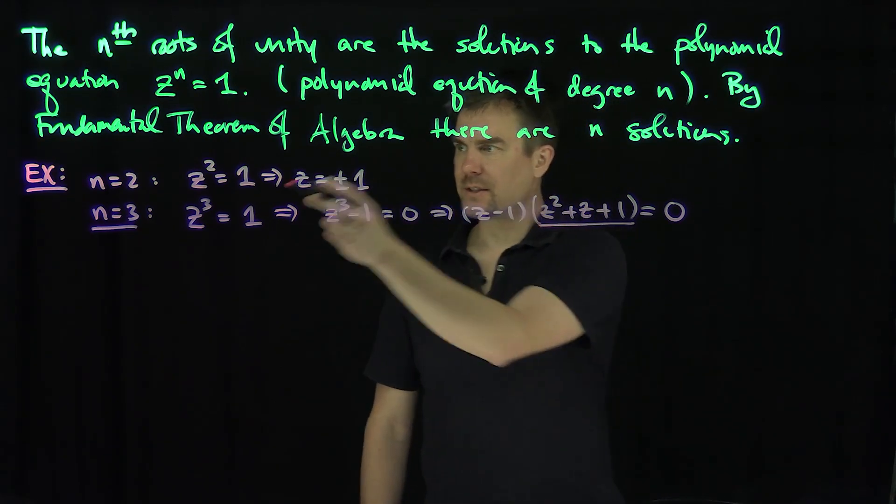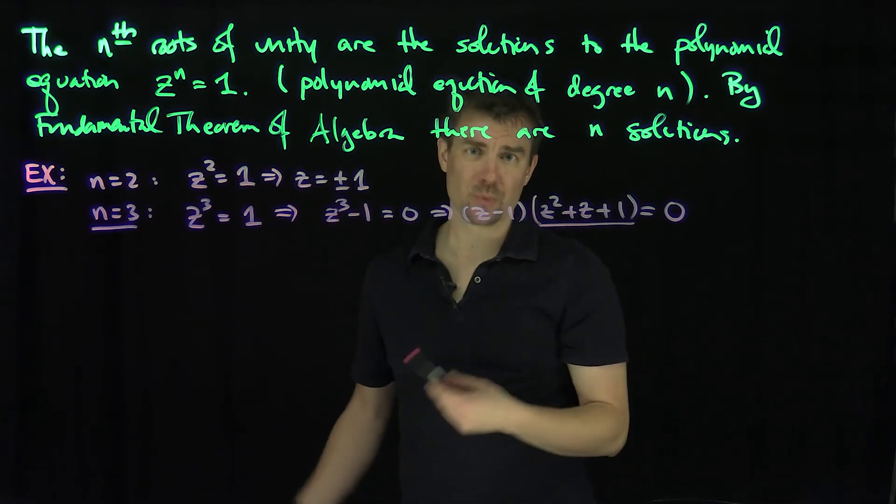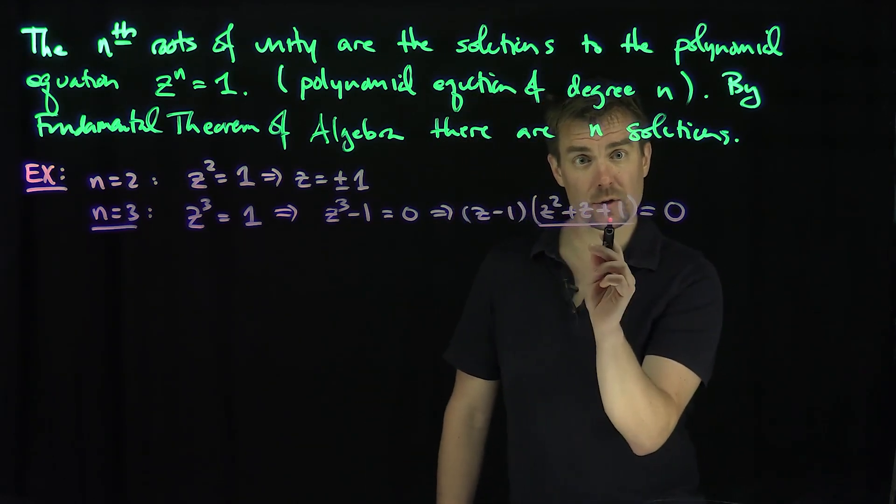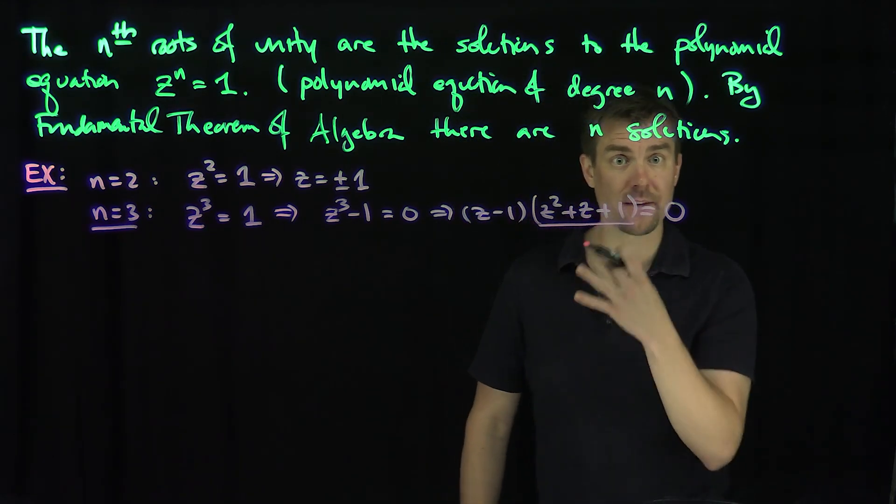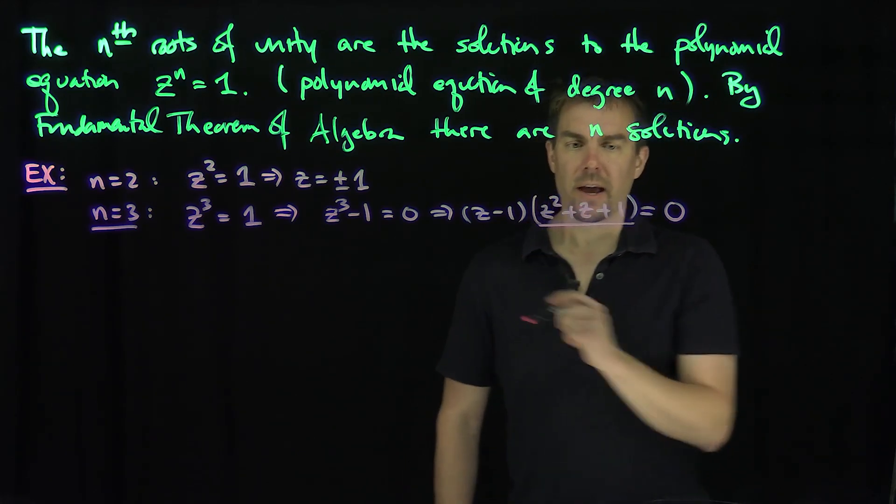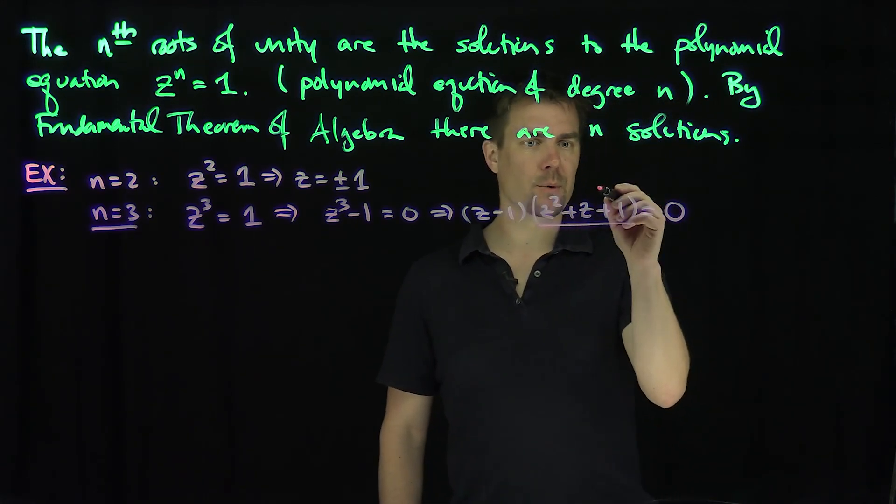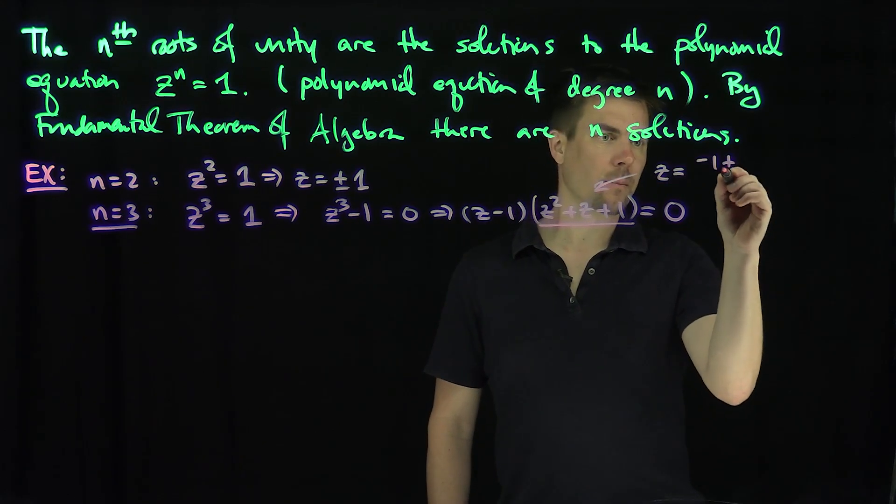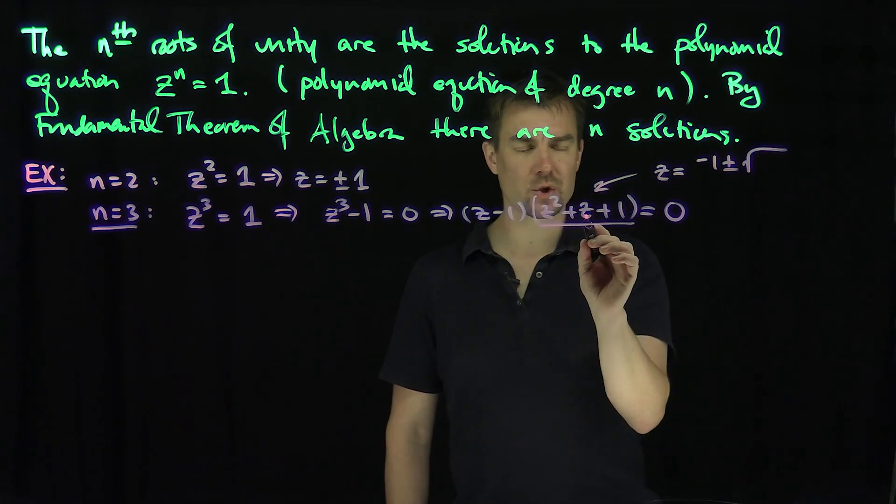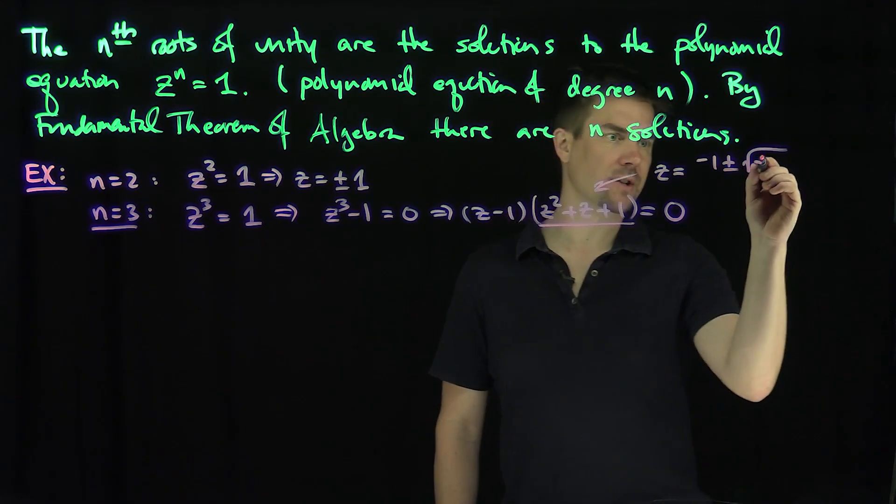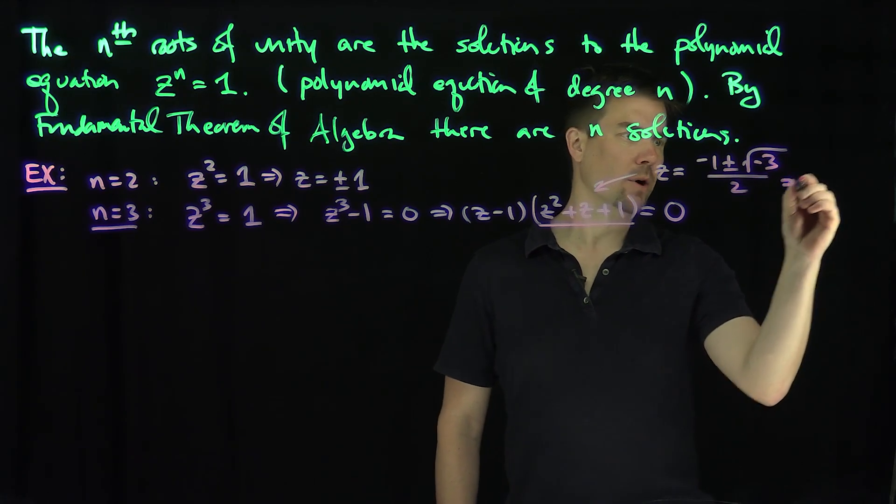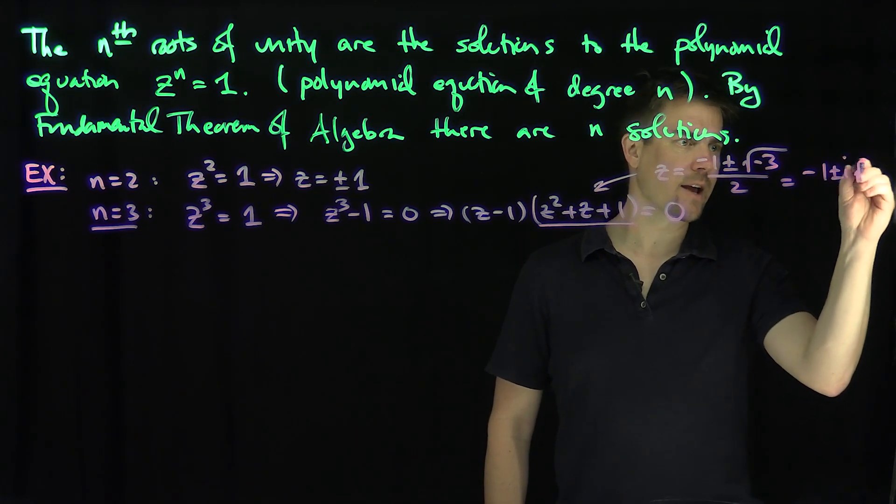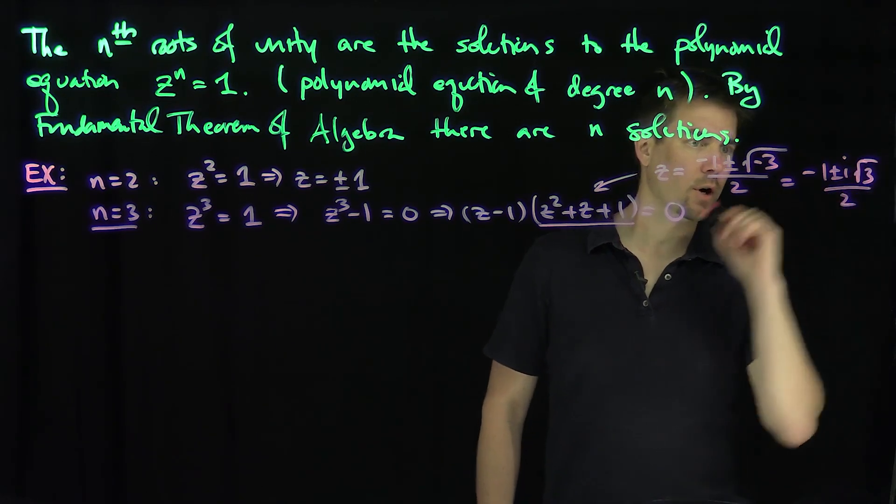So we'll get z equals 1, which is always going to be a solution. And that hints at the cyclotomic polynomial structure that the remaining roots have to satisfy. If we solve this, the solution is z equals negative 1 plus or minus the square root of b squared, which is 1 minus 4ac, so that's negative 3 all over 2. So the other two roots of unity are negative 1 plus or minus i root 3 over 2.